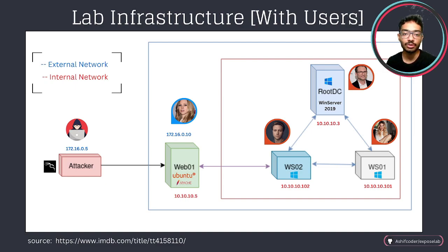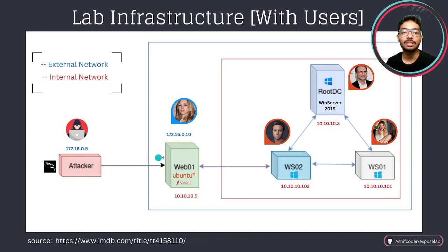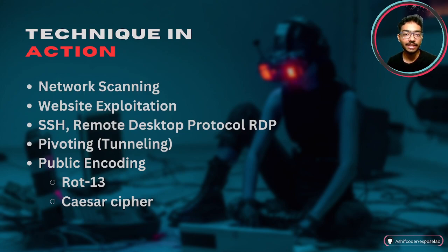We built the lab setup using an automation script, and now we are going to attack the Active Directory network. For the recap, this is the internal network and the external network. As an attacker, we will just have access to the external network but not the internal network, and the Active Directory setup is present on the internal network of the lab infrastructure.